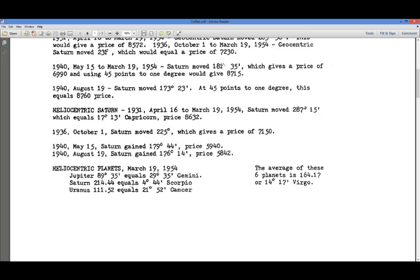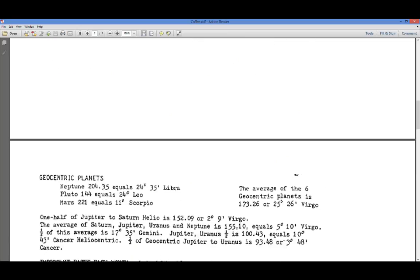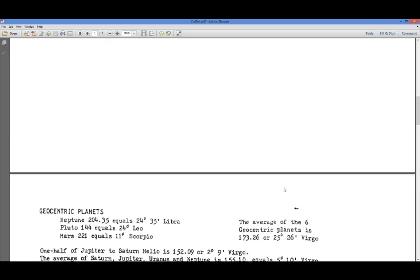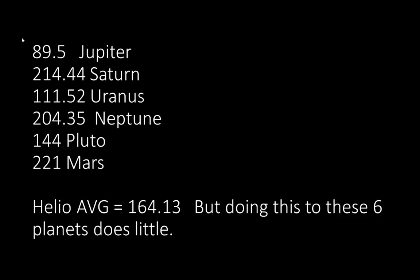He says the average of these six planets — well, there's only three here, and the other three are on the other page. He says the average of these six geocentric planets is a whole other thing. He's got Jupiter at 89.5, Saturn at 214.44, Uranus at 111.52, Neptune at 204.35, Pluto at 144, Mars at 221. The heliocentric average is 164.13. What you do is take all six, add them up, and divide by six — that gives you the average.